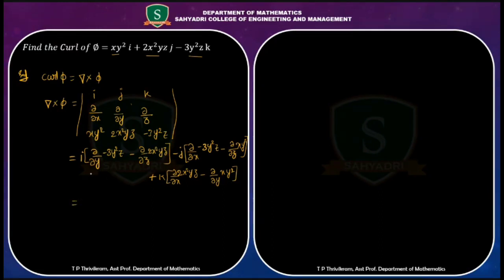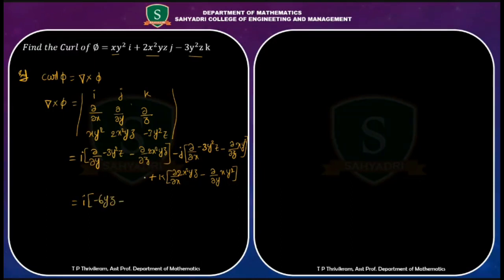Now let us compute the derivatives. For the i term: ∂/∂y of (−3y²z) gives −6yz, and ∂/∂z of (2x²yz) gives 2x²y, because we are differentiating with respect to z.